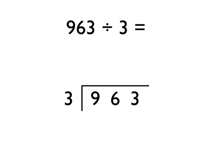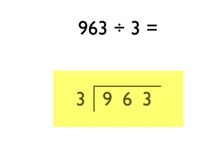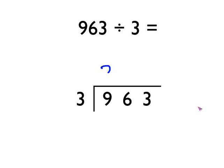Notice how I've laid out my workings down here — the 3 goes to the left of what looks like a bus shelter sign, and then under that bus shelter I put the 963, as you can see there. So 963 divided by 3 is laid out like this. Then we start by looking at this 9 and saying: how many times does 3 go into 9? Well, 3 goes into 9 three times — 3 times 3 is 9 — so we put a 3 up here.